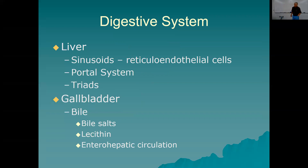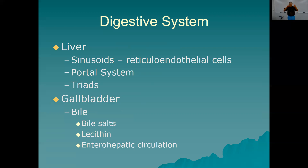Now the liver, an accessory digestive organ. It has sinusoids — the leakiest capillaries in your body — full of reticular endothelial cells. It's a portal system: blood capillaries in the villi of the small intestine coalesce into the hepatic portal vein, which brings blood to the liver and empties it into the sinusoids. Hepatocytes decide what to do with the nutrients. There are six-sided lobules in the liver, and at the corners of these lobules are triads — a branch of the hepatic artery, a branch of the hepatic portal vein, and a bile ductule.